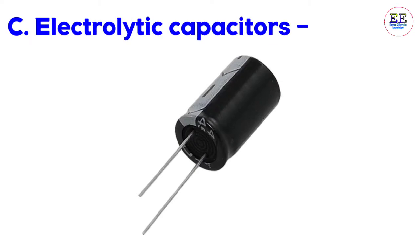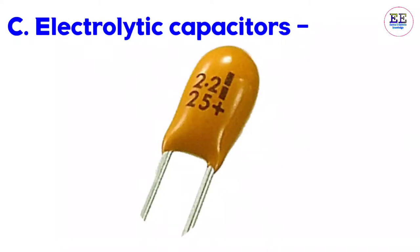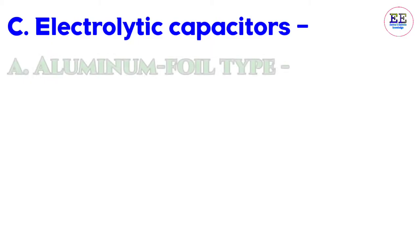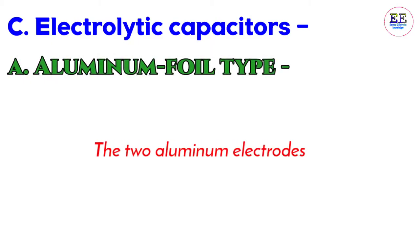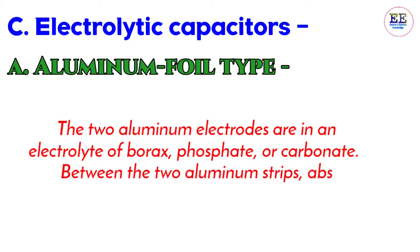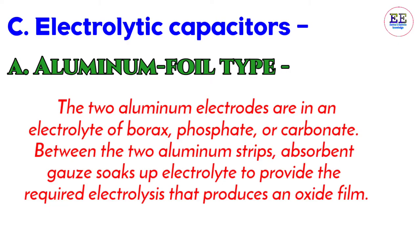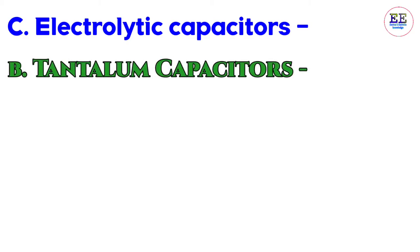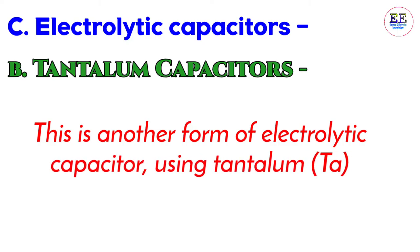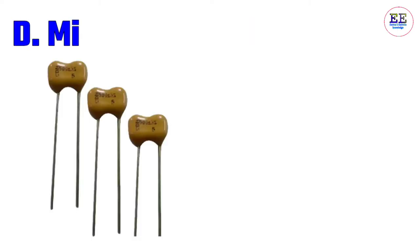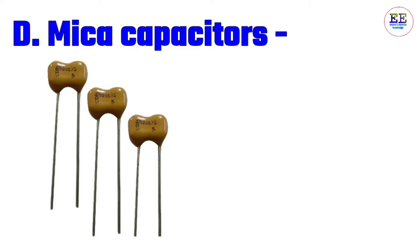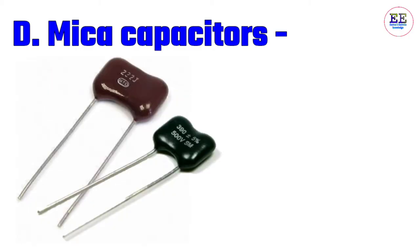C) Electrolytic capacitors: electrolytic capacitors are mainly divided into two types — aluminium foil type and tantalum capacitors. In the aluminium foil type, two aluminium electrodes are in an electrolyte of borax, phosphate, or carbonate; between the two aluminium strips, absorbent gauze soaks up the electrolyte to provide the required electrolysis that produces an oxide film. Tantalum capacitors are another form of electrolytic capacitor using tantalum instead of aluminium.